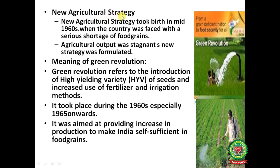New agriculture strategy: the new agriculture strategy took birth in the mid-1960s when the country was faced with a serious shortage of food grains and agricultural output was stagnant, so a new strategy was formulated. Meaning of Green Revolution: Green Revolution refers to the introduction of high-yielding variety seeds and increased use of fertilizers and irrigation methods. It took place during the 1960s, especially from 1965 onwards, and was aimed at making India self-sufficient in food grains.